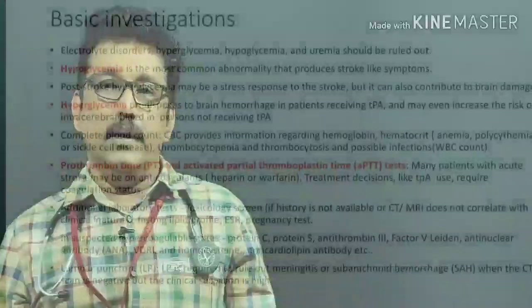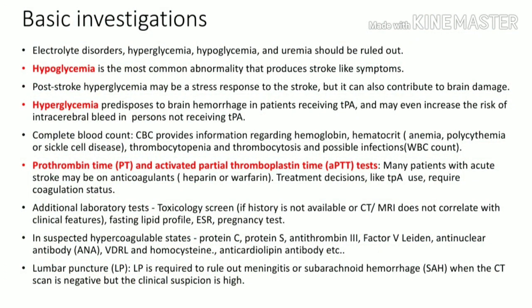The first investigation in the emergency room should be blood sugar — a capillary glucose test on the spot. Hypoglycemia can mimic any type of stroke, including hemiparesis, hemiplegia, and monoparesis. Additional investigations include basic electrolytes, prothrombin time, INR, and APTT to assess for bleeding tendencies. These are the main investigations to be done promptly.